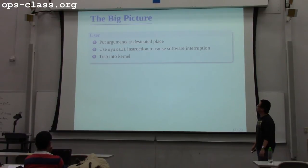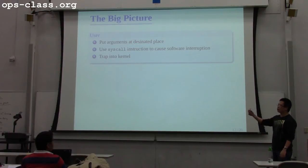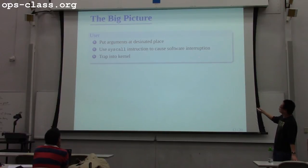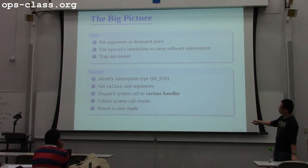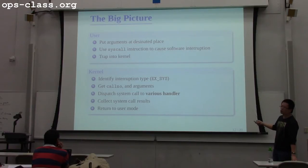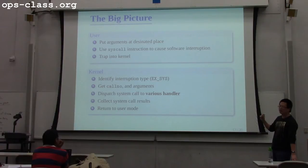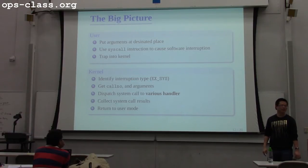So the big picture is: the user places the arguments in registers A0 to A3, uses the syscall instruction to trap into the kernel. The kernel identifies what happened, what the call number is, what the arguments are, and dispatches the syscall to the appropriate handler. After handling the syscall, the results are placed in the corresponding registers and control returns to user space. That's how the syscall system works. What you need to do is implement just this handler step — a very tiny piece of the whole system.